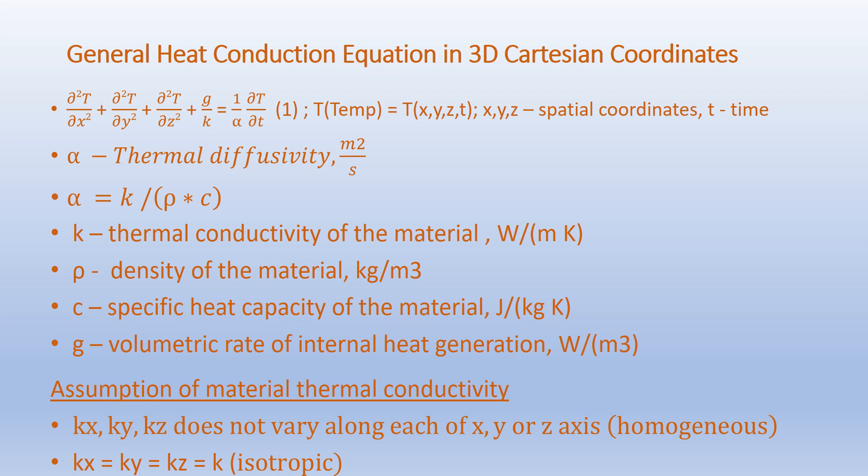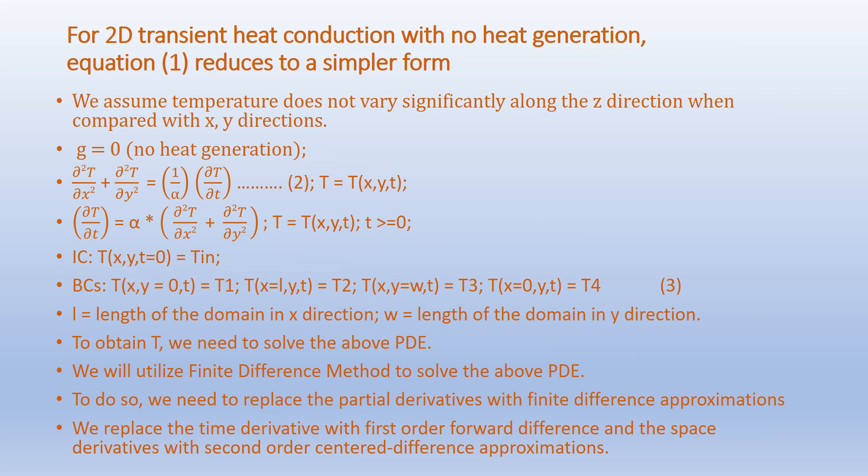We assume that the material thermal conductivity is homogeneous and isotropic inside the medium, so k is uniform over the entire domain. For 2D transient heat conduction with no heat generation, the equation reduces to a simpler form. We assume the temperature does not vary along the z direction compared with x and y directions, and the heat generation term g equals 0. Accordingly we get: d²T/dx² + d²T/dy² = (1/α)(dT/dt), where T is a function of x, y, and t. This is rearranged as: dT/dt = α(d²T/dx² + d²T/dy²).